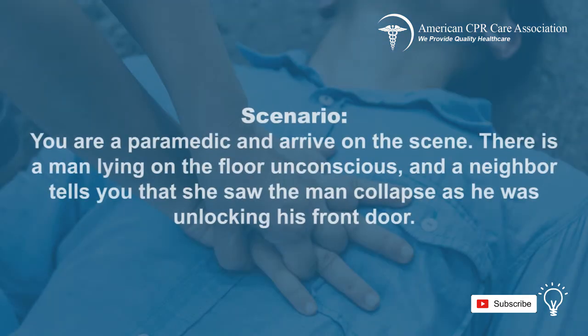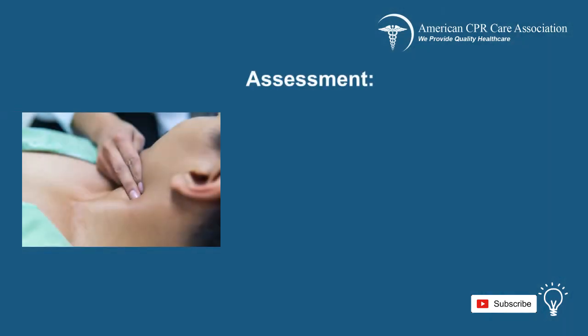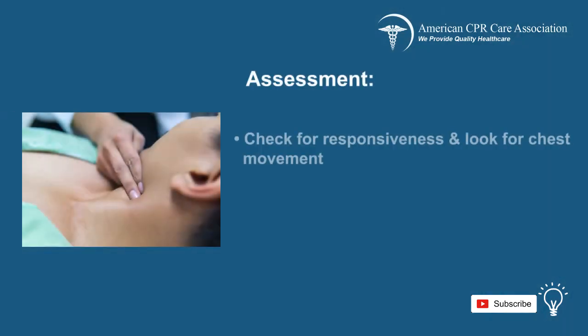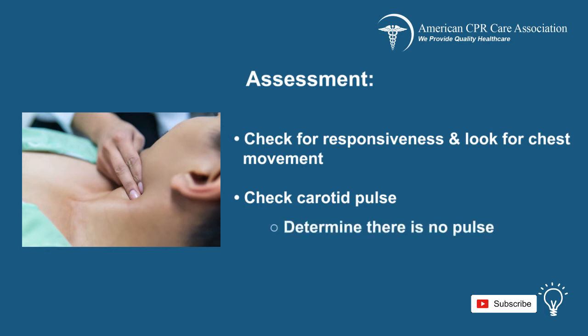You are a paramedic and arrive on the scene. There is a man laying on the floor unconscious, and a neighbor tells you that she saw the man collapse as he was unlocking his front door. First, assess the situation. Check the patient for responsiveness by tapping and shouting, "Are you alright?" Look at his chest for any movement. When you check the carotid pulse, you note that there is no pulse present.